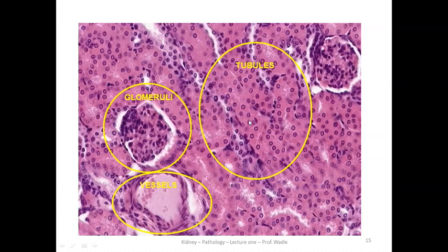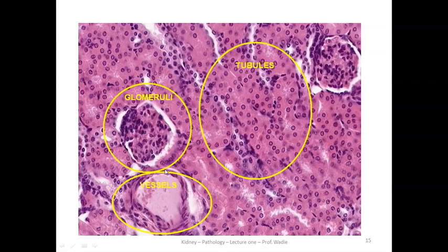Here is the real-life histology picture. This is histology — it does not look as nice as the previous illustration, but we can identify tubules, tubular nuclei, cells and nuclei. Here you can see the glomerulus — glomerular cells containing mesangial cells and visceral and parietal epithelial cells. It is not as clear as in the demonstration, but this is the histology that we can see under the microscope. And you can see blood vessels in the kidney.